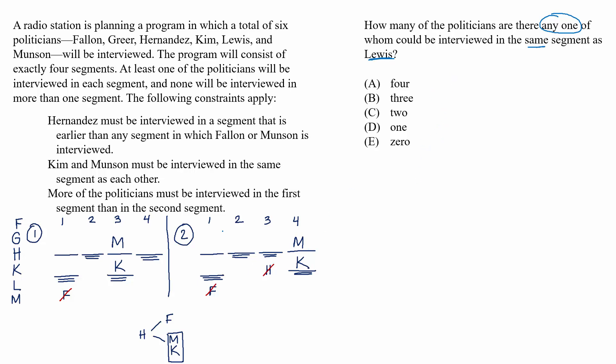Since we already placed Munson and Kim into one pair, the Lewis pair here would have to be the other pair. That would be in segment one in both scenarios.